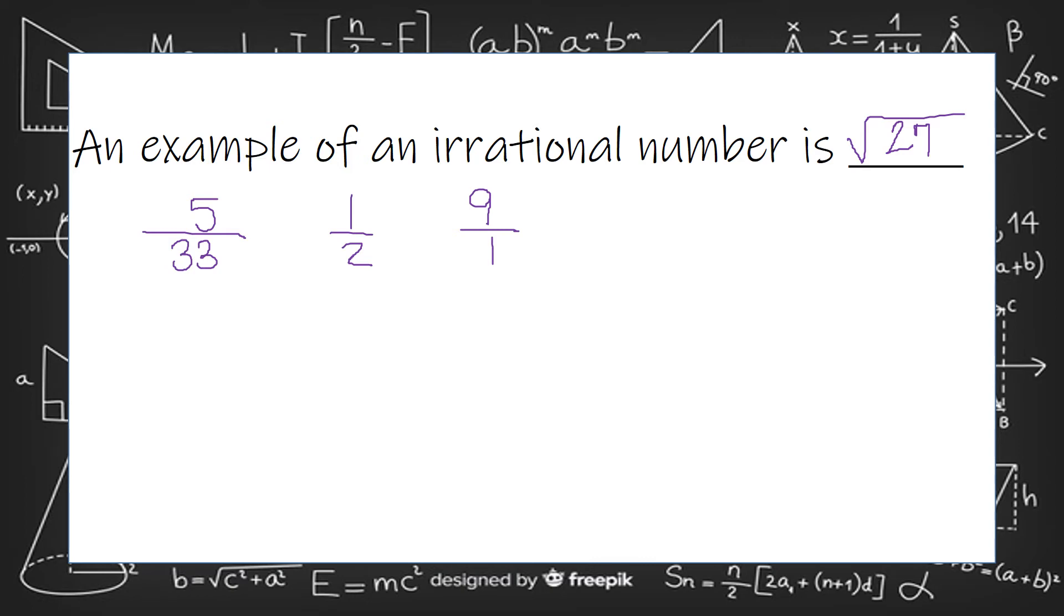Those are examples of irrational numbers. Another one that is extremely famous is one we'll use when working with circles. It's pi. Pi is an irrational number.